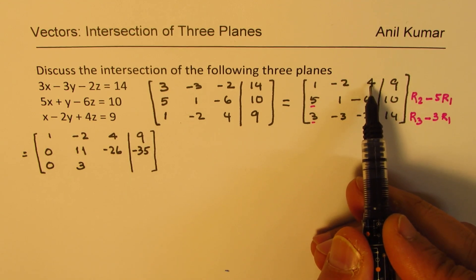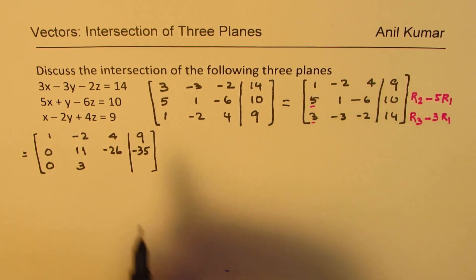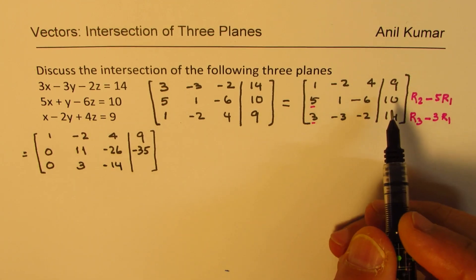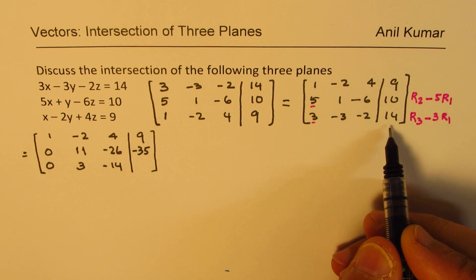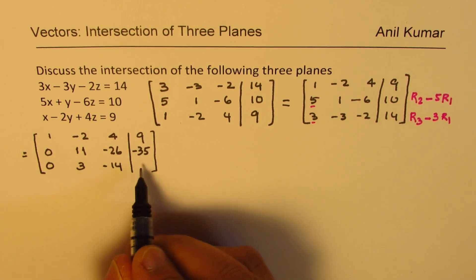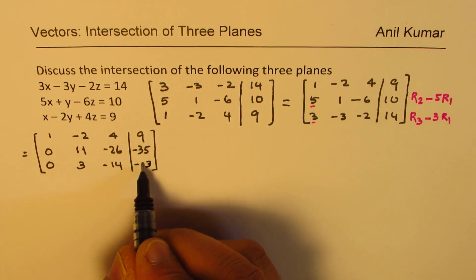Minus 12 from minus 2 gives us minus 14. And 3 times 9 is 27. So when you do minus 27, you get negative 3, 1, 13.